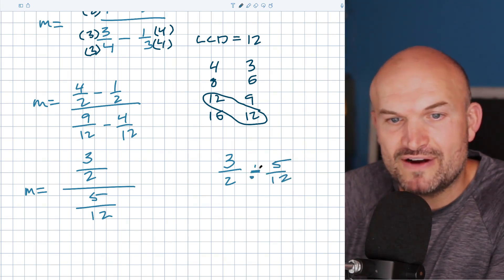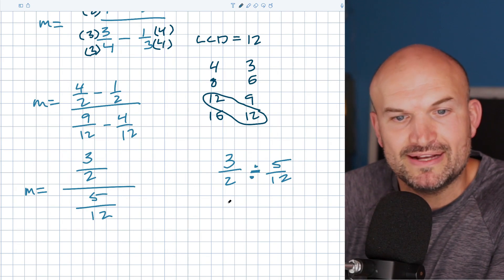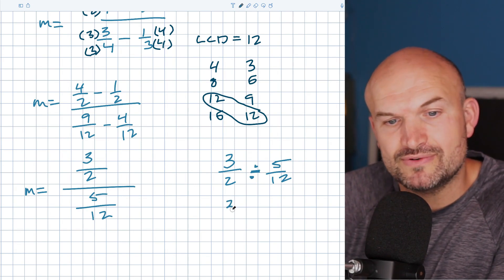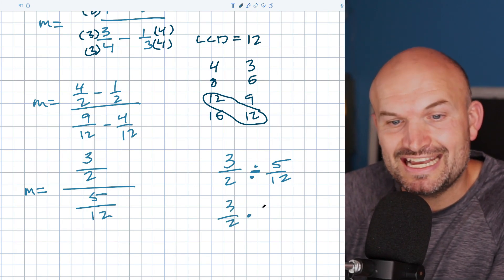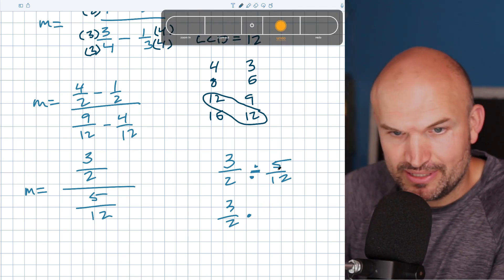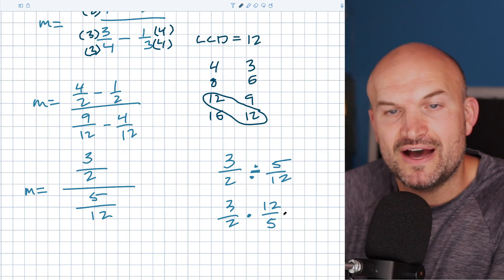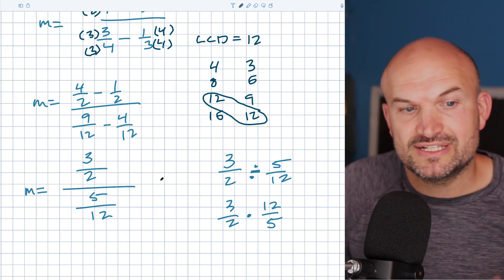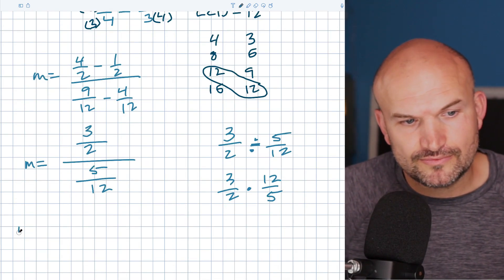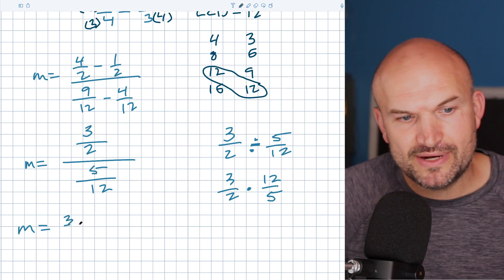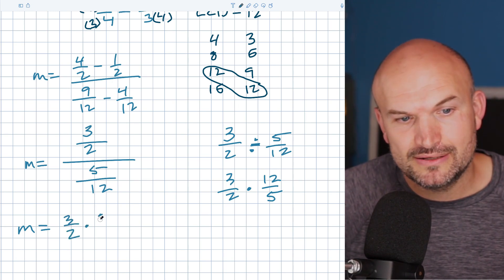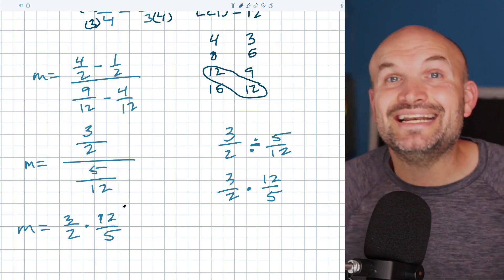Now, hopefully you remember like when you have a fraction divided by a fraction, like how can you rewrite that? You can rewrite it as a product, right? You can say this is a 3/2 times, you got to flip it, times the reciprocal, which is 12 over a 5. So to simplify this, I can now say this is a 3/2 times a 12/5.